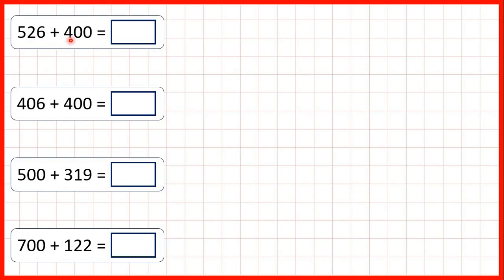For these questions we're adding three-digit numbers, but in each question one of the numbers is a multiple of a hundred — that's a number that ends in two zeros, or has zeros in the tens and ones place values.